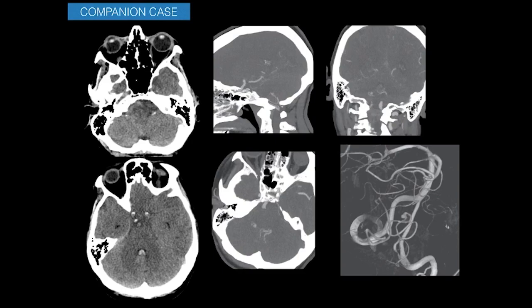In other cases, aneurysms may not be as apparent. In one companion case, the subarachnoid hemorrhage itself was subtle — some blood along the right perimedullary cistern extending into the foramen of Luschka and fourth ventricle. CT angiogram showed no aneurysm at the PICA origin, but distally within the cranial loop of the PICA there was a small dissecting aneurysm demonstrated on DSA. If not identifiable on CT angiogram, digital subtraction angiography must be performed.